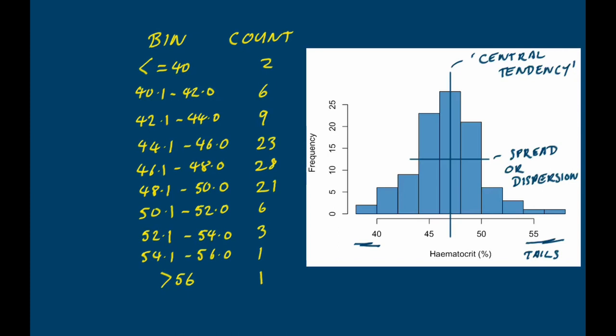Those of you who've met this kind of thing before will probably have noticed that this frequency histogram appears to be following what we would expect if our data were drawn from a normal distribution. You may well have heard of a normal distribution. Normal distributions have this characteristic bell-shaped curve and you can pretty much see a bell shape in those data.